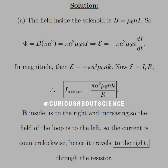The negative sign isn't affecting the magnitude; we just want the whole thing. We also know that the EMF equals I_R times the resistance, so the current in the resistor is just E divided by R, and we see that simplifies straightforwardly. That is just the magnitude.